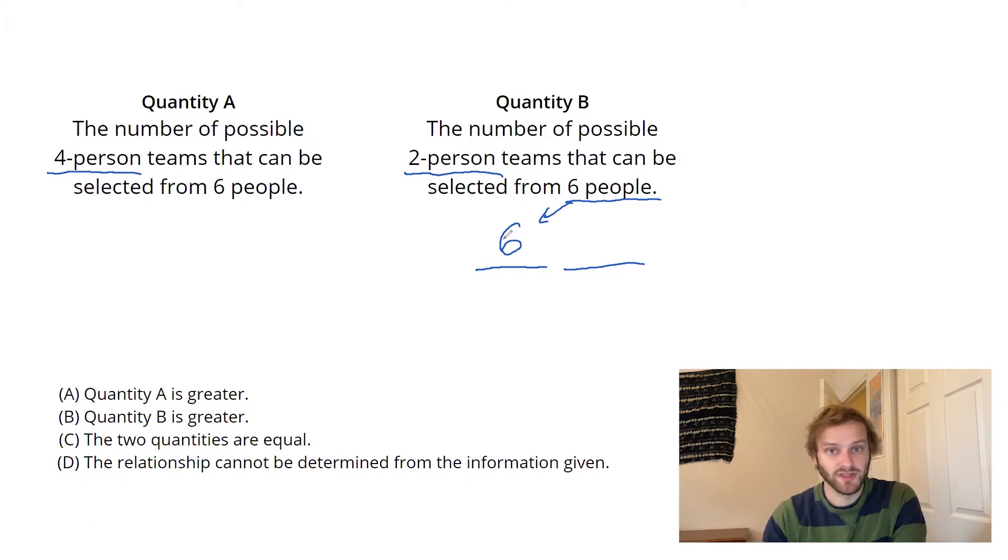The next slot is my second choice, the second player on the team. Well, if I've already picked someone for the first player, I have five options left for my second player, and I'm going to have to multiply those to get my total number of options.